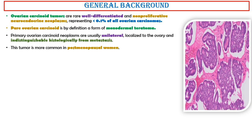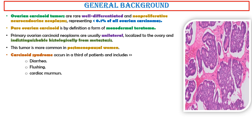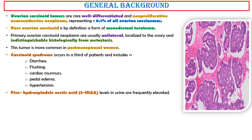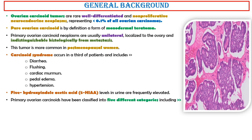This tumor is more common in postmenopausal women. Carcinoid syndrome occurs in a third of patients and includes diarrhea, flushing, cardiac murmurs, pedal edema, and hypertension. 5-hydroxyindolacetic acid (5-HIAA) levels in urine are frequently elevated.